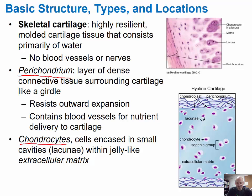The cells of the cartilage are called chondrocytes, and they are surrounded by or encased by small cavities called lacunae within the jelly-like extracellular matrix. Here we have our cartilage model, and above is an image showing the perichondrium. Here are the chondrocytes within the lacunae, and then you have the extracellular matrix. The diagram also shows the perichondrium with our chondroblasts — these are cartilage-forming cells. Once the cells have grown cartilage around them and become trapped within the lacunae, they are called chondrocytes.